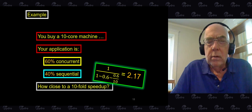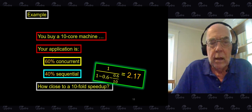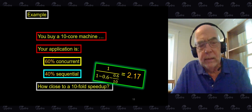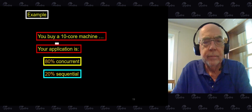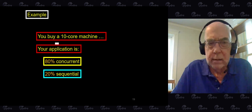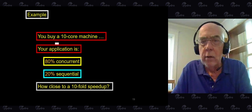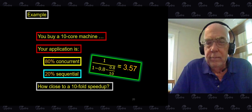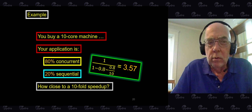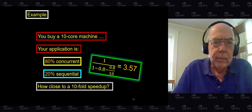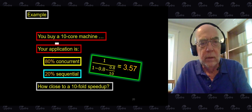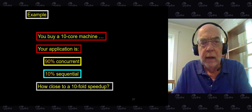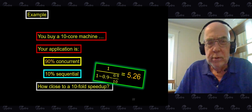To deal with that, you force your programmers to work on evenings and weekends to reduce the sequential part and increase the concurrent part. After a lot of work, they come up with something that is now 80% concurrent and 20% sequential. You run your experiments to see how close you get to a 10-fold speedup — and now it's basically three and a half. You work very hard, 80% of your code is concurrent, but you're only getting a three and a half-fold speedup.